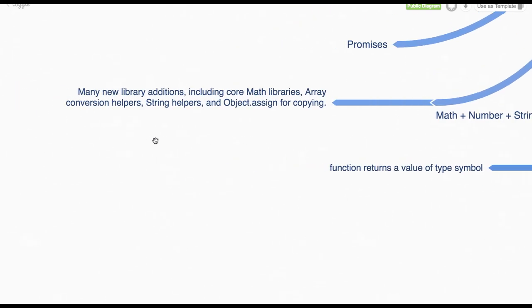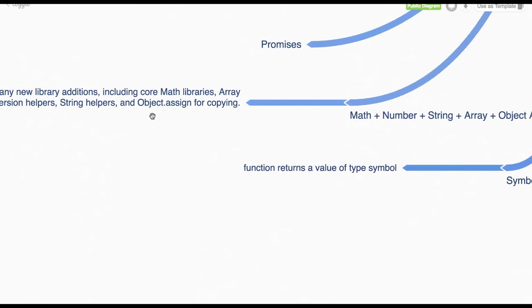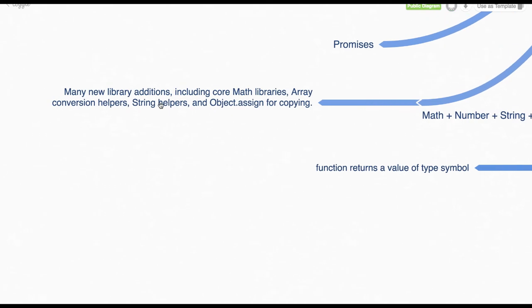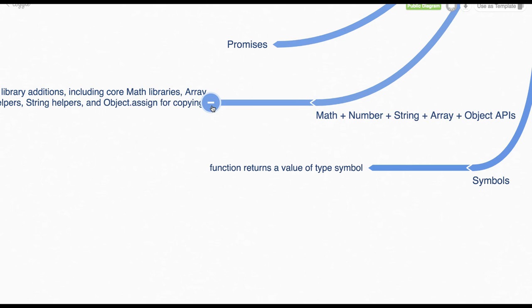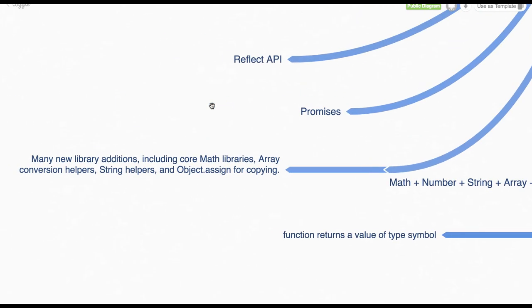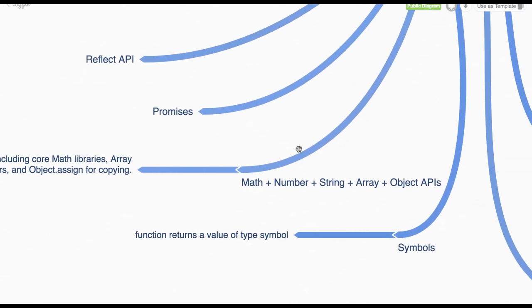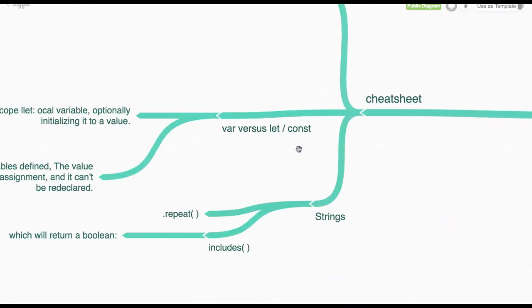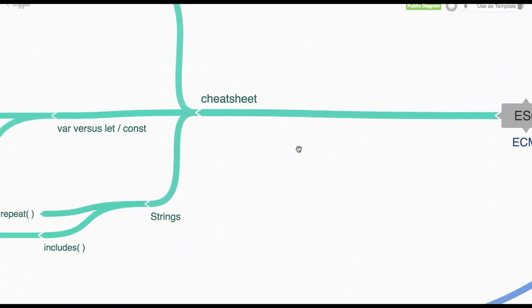So we have all these things. Then we have Symbol, then we have different APIs like in Object we have Object.assign as a new method. In the array we have Array.includes. Earlier we used to do Array.indexOf, now we can use Array.includes method. So this is a quick recap of all the features of ES6.